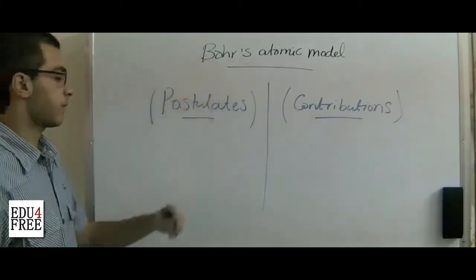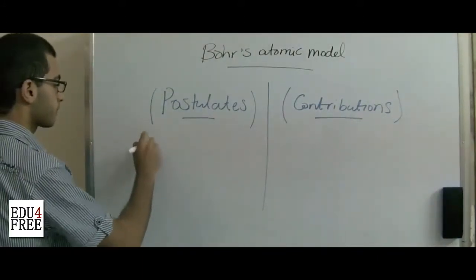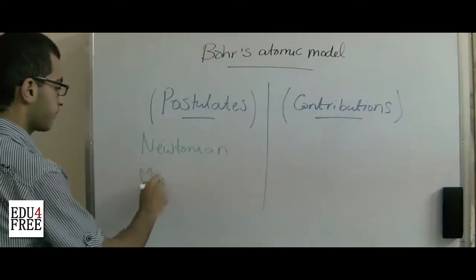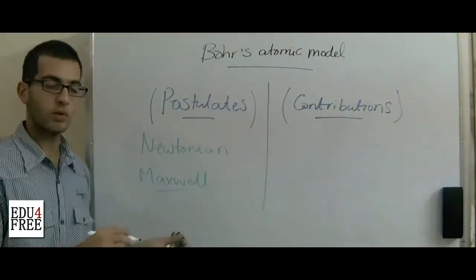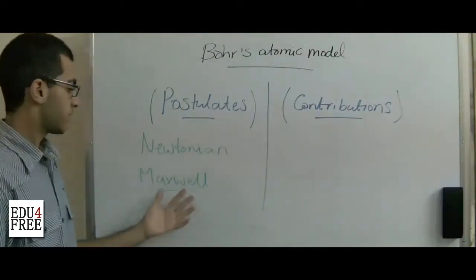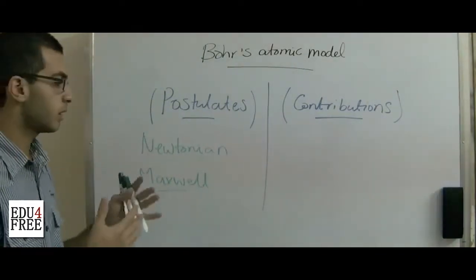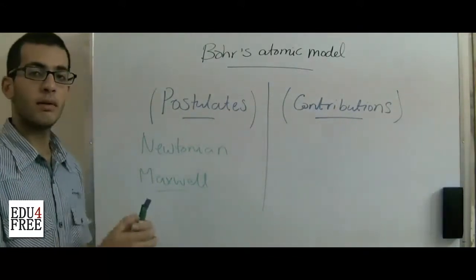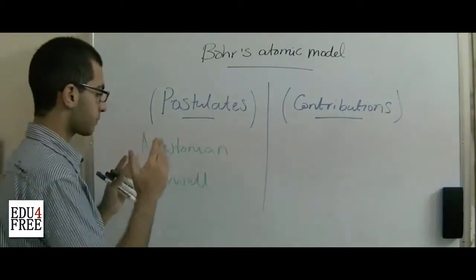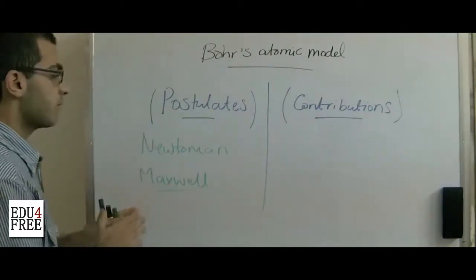We begin with the postulates of Bohr. First, Bohr didn't study the atomic structure based on Newtonian mechanics laws, which were used by Maxwell. As we know, those laws led to a contradiction between Maxwell and Rutherford on the point of the emission of radiation by electrons. Maxwell said that if there are radiations during the orbiting of electrons around the nucleus, these radiations will cause the radius of the orbit to decrease, until finally the electron hits the nucleus — destroying the atomic system — which is theoretically impossible.